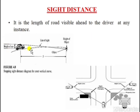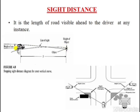In this picture, you can see a vehicle moving on a vertical curve. Here, this is the height of a driver, and this is an object having a certain height. A driver driving a car at this point is not able to see the object at another point because the line of sight is obstructed at the intersection of the curve. This obstruction is caused due to the vertical curve.